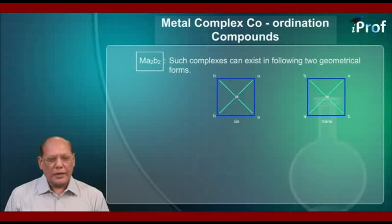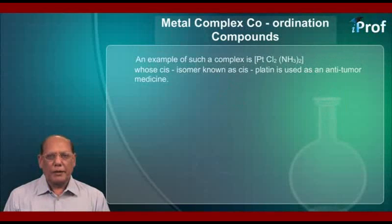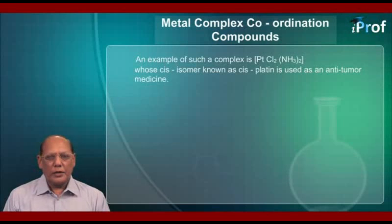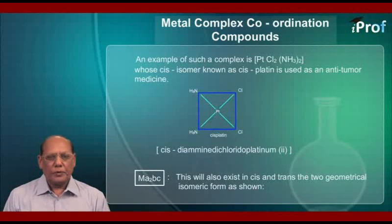MA2B2 complexes can exist in two geometrical forms, shown as cis and trans. An example of such a complex is [Pt(Cl2)(NH3)2], whose cis isomer, known as cisplatin, is used as an anti-tumor medicine. The structure of cisplatin is shown here. Its IUPAC name is cis-diamminedichloridoplatinum(II).